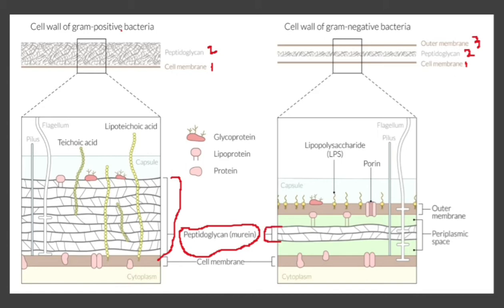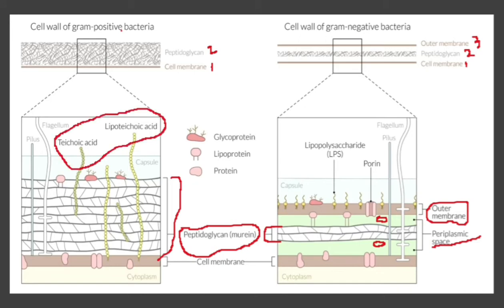The second thing to note is the periplasmic space — this is the space between the outer membrane and the cytoplasmic membrane. The other thing to note is teichoic acid or lipoteichoic acid — these are specific to gram positive bacteria, so if you hear about teichoic acid or lipoteichoic acid, remember gram positive bacteria. For gram negatives, you need to remember lipopolysaccharides.